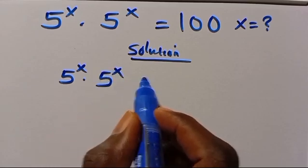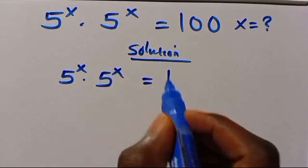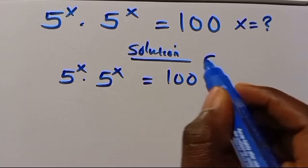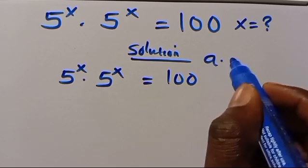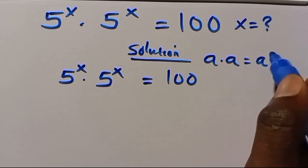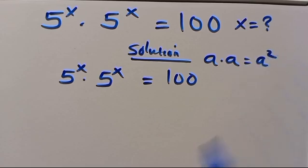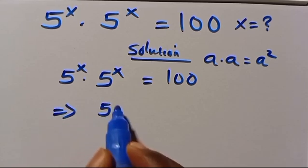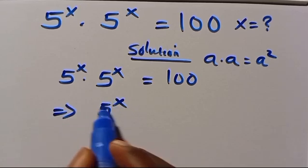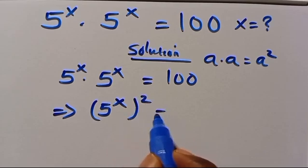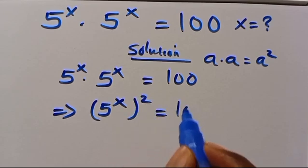When we have a times a, that equals a to the power of 2. So from here we are going to have 5 to the power of x, in parentheses, to the power of 2, equals 100.